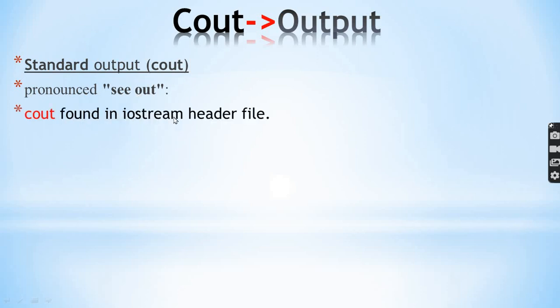Cout is found in the iostream header file, which is the basic structure of the C++ program. Iostream, which includes iostream, is the library file which is in the background and this is the program that includes the iostream.